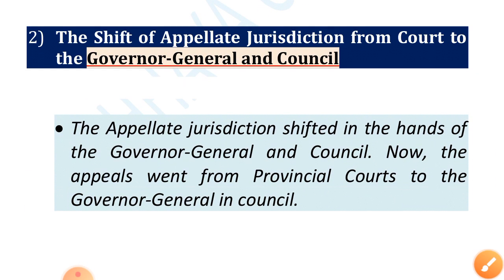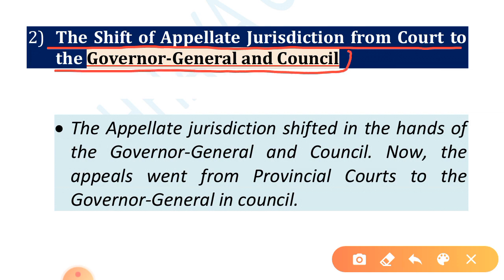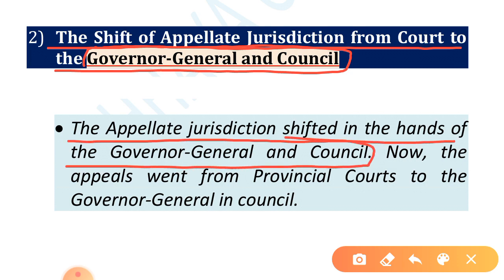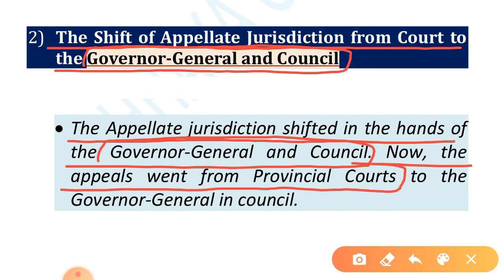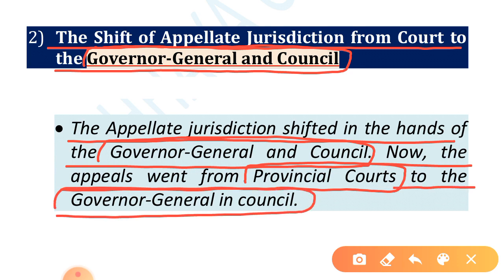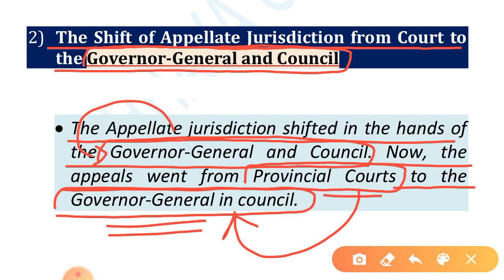Next point: the shift of appellate jurisdiction from the court to the Governor General and Council. The appellate jurisdiction shifted into the hands of the Governor General and Council. Now, appeals went from provincial courts to the Governor General and Council — meaning the Governor General's Council became the appellate court for provincial courts.